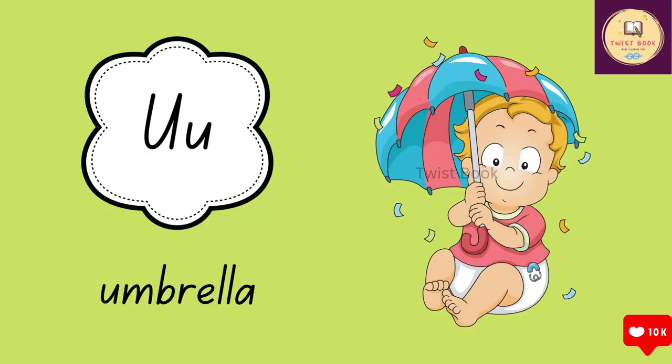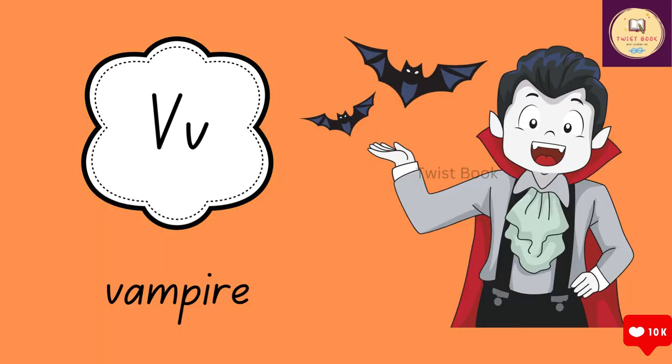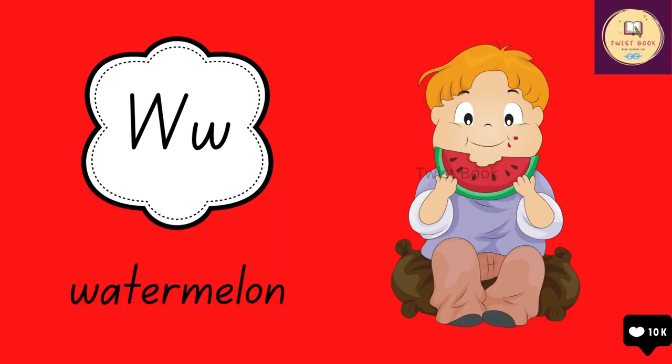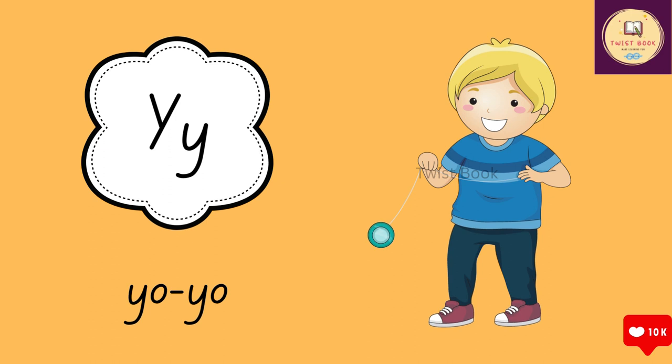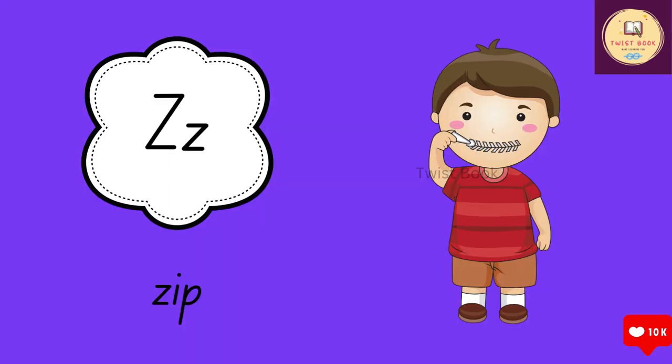U for umbrella, D for vampire, W for watermelon, X for x-ray, Y for kill-till, Z for slip.